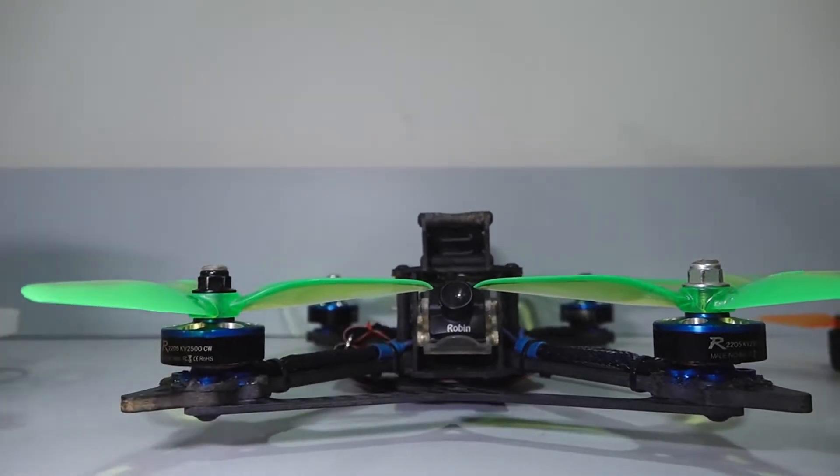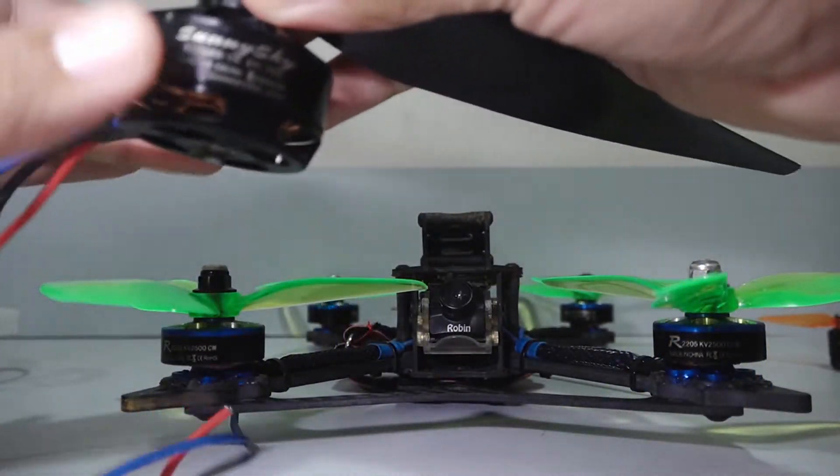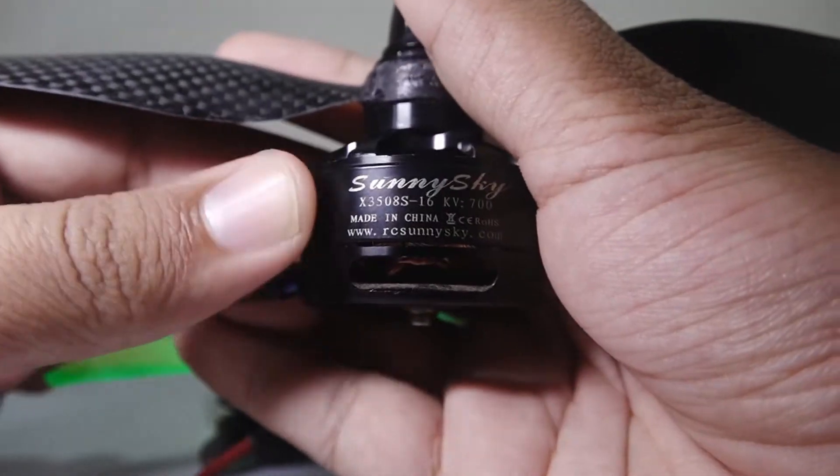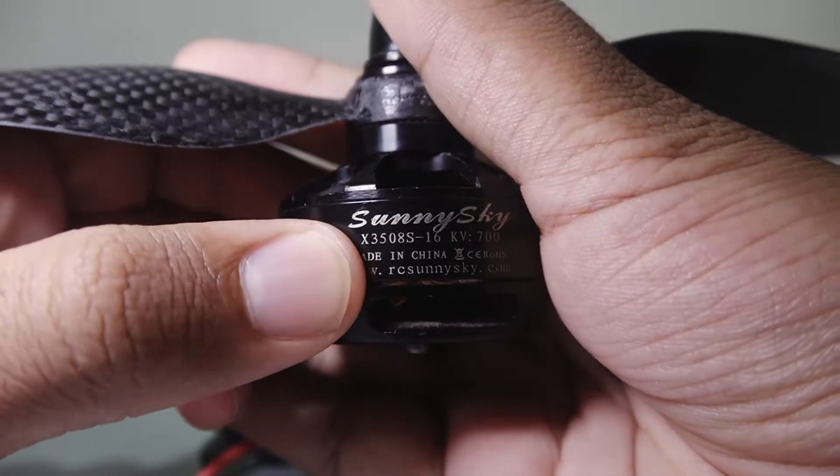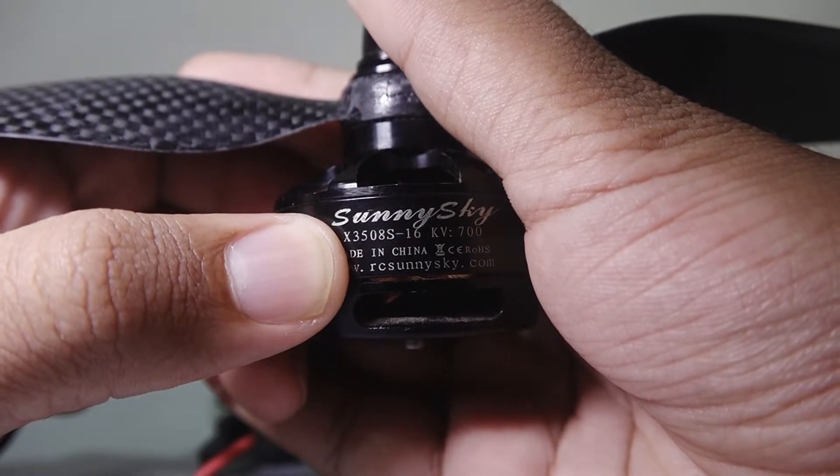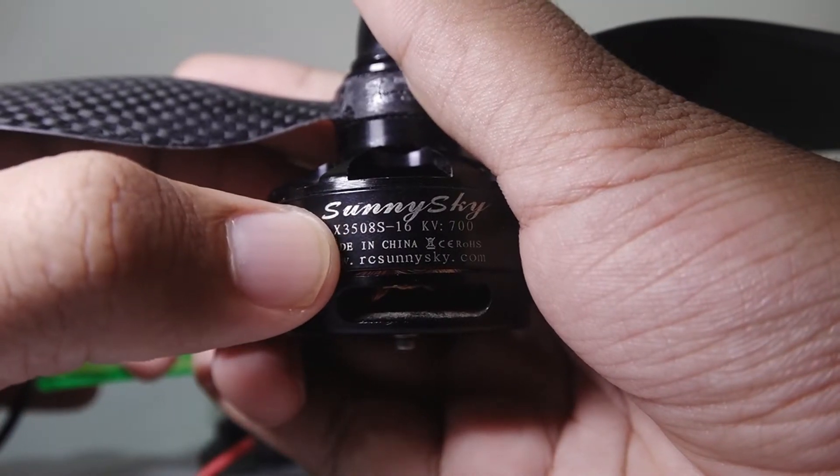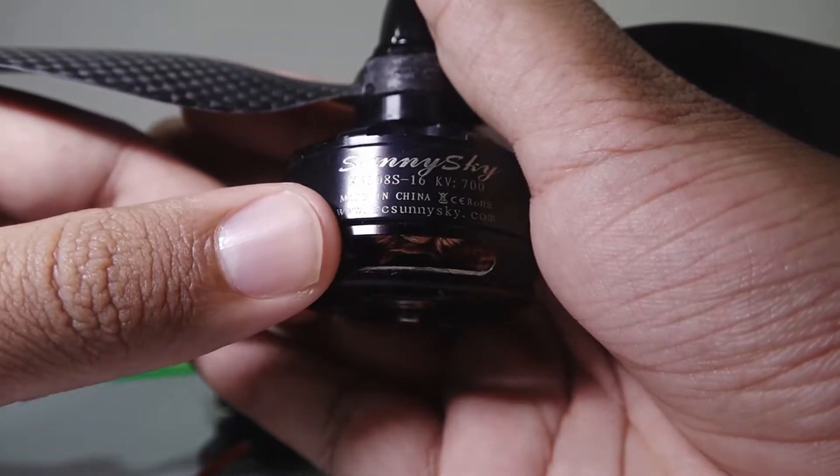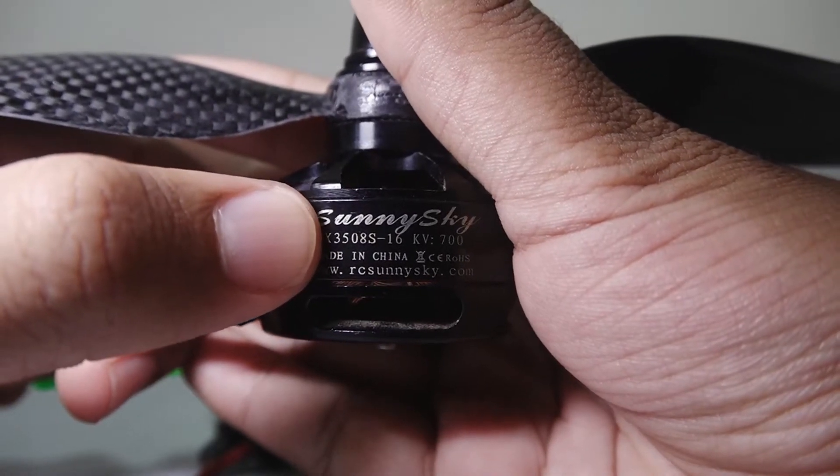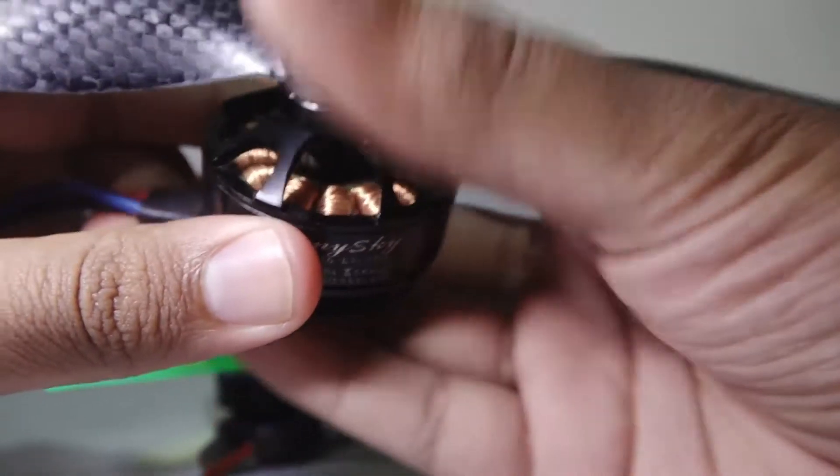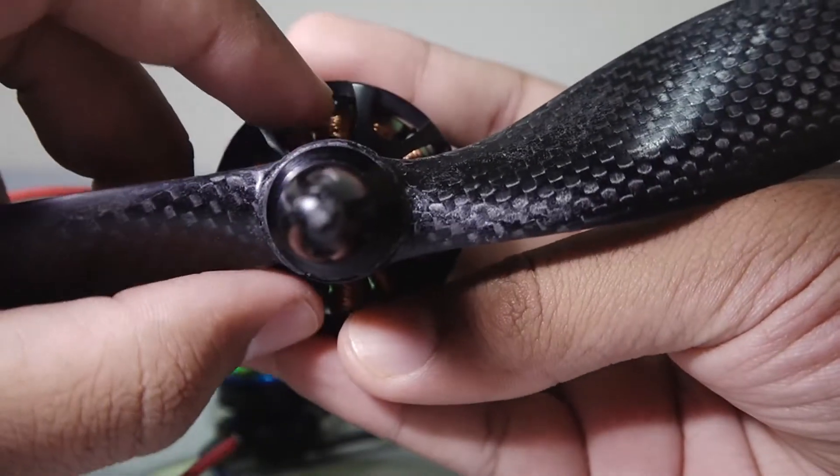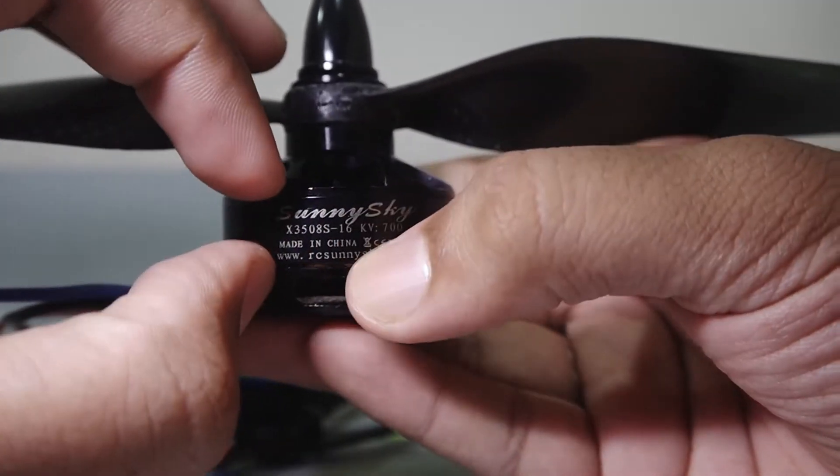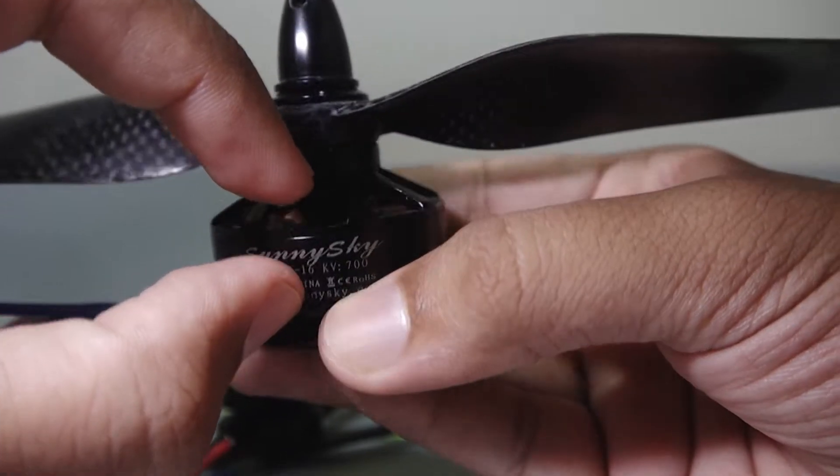Let's look at motor dimensions. When buying a motor, you'll see a few numbers mentioned. As you can see here, it says 3508. X and S are to be ignored, only look at the number. The first two digits, 35, represent the diameter of the stator. The other two digits, 08, is the height of the stator.